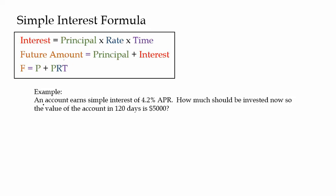Next example: an account earns simple interest of 4.2% APR. How much should be invested now so that the value of the account in 120 days is $5,000? How much should be invested now — that's the principal, and that's what we're trying to find. The $5,000 is the future value. The future value of the account is going to be the amount we invest now plus the interest we earn, which equals principal times rate times time. The future value we want is $5,000.